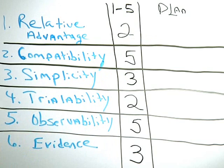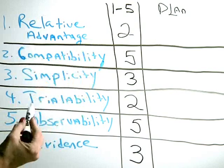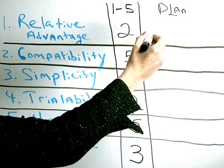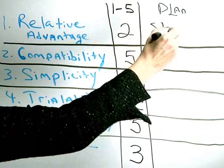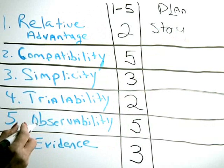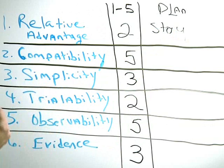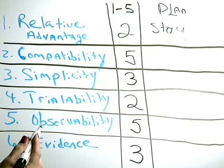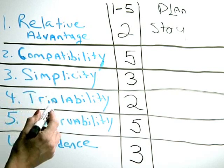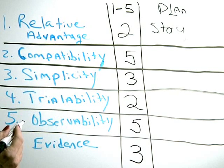So for example, with relative advantage, we gave that a 2. And so what I might do right away is think about storytelling and maybe rounding up some of my key people and communicators and have them start telling powerful stories about how it saved a patient, how it's improved the staff satisfaction, how it's improved patient satisfaction, and start telling those types of stories.